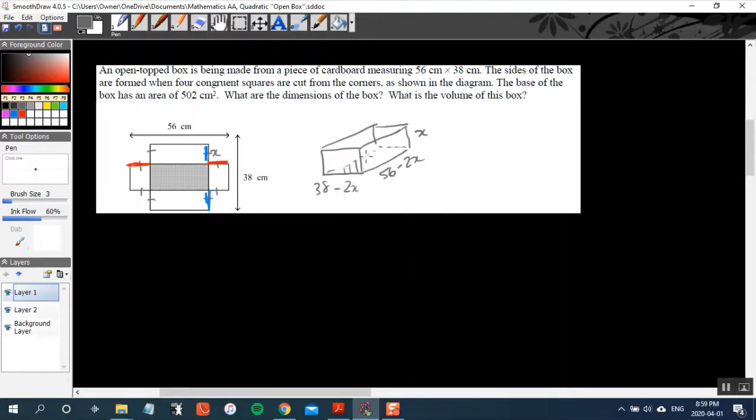Since we know the base of this box, we can use a simple area formula. The area of the base will be 38 minus 2X multiplied by 56 minus 2X. This will allow us to figure out what X is, which is also the height of the box. Then as a follow-up, after we determine X, we'll simply do length times width times height to calculate the volume. So the area formula in terms of X is (38 - 2X) multiplied by (56 - 2X).